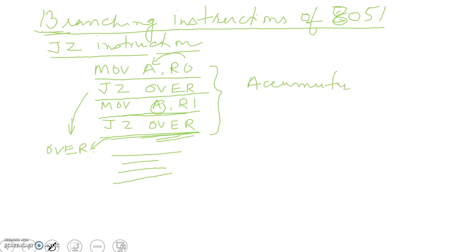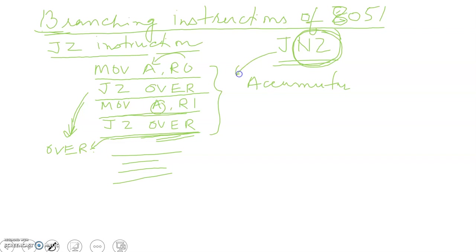Similarly, there is another instruction JNZ. The function is similar except that it checks whether A is not 0. With JZ it was checking when A was 0 to jump; here with JNZ, when A is not 0 it will move to the label. That's the difference.